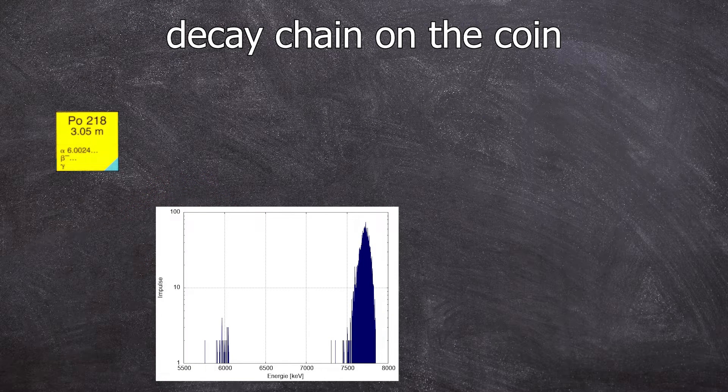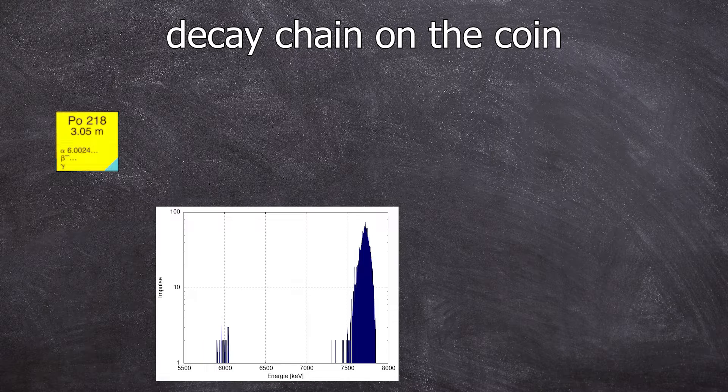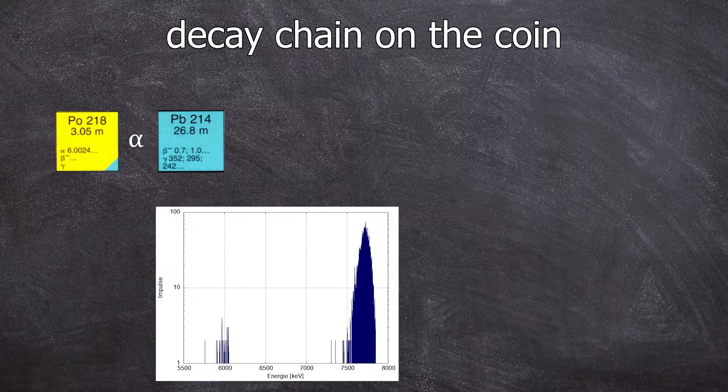Now I have a fixed amount of polonium 218 on the coin and during the time it took me to reach the detector, my polonium 218 has decayed into lead 214. Of course, it also decayed during the collection, but we didn't notice it.